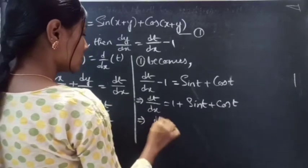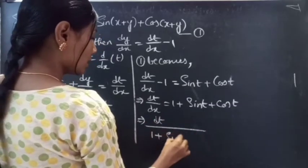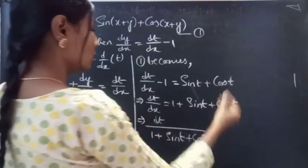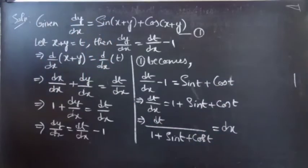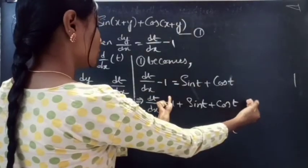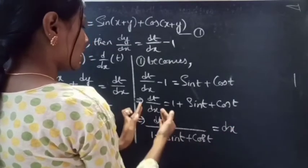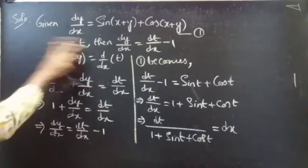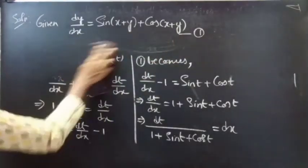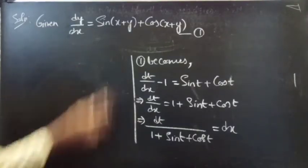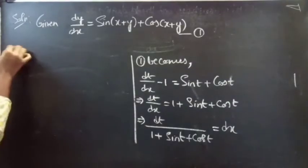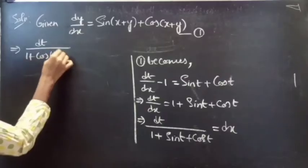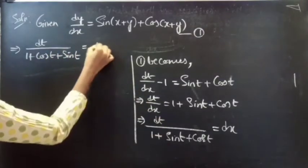So we can write it as dt divided by (1 plus sin(t) plus cos(t)) equals dx, taking dx to the right-hand side. Simply, we are taking the RHS part to the denominator and dx to the RHS. Write it as dt over (1 plus cos(t) plus sin(t)) equals dx.